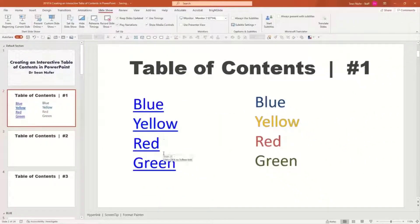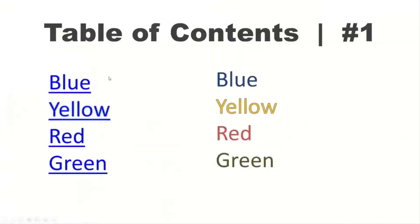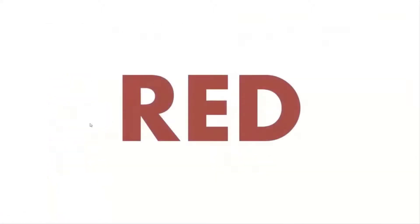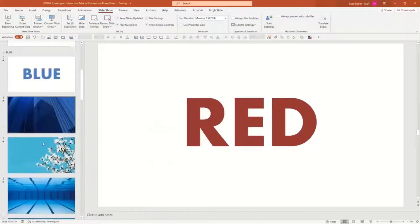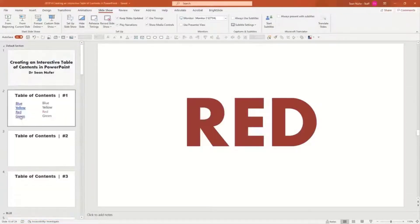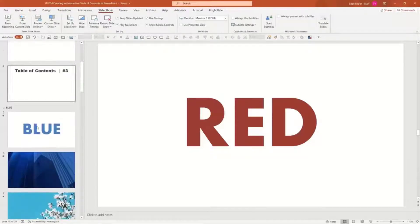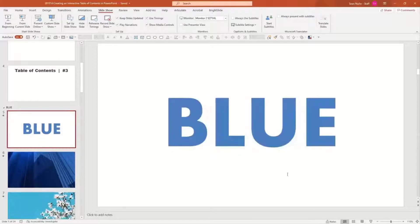This is now my table of contents that is hyperlinked. Let's give it a preview before we do anything else. I have blue, yellow, red — let's click on red — and that'll take me to the red section.